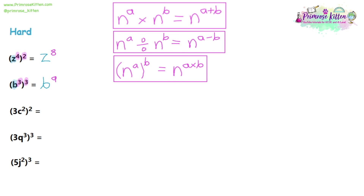Now with question 3, we've got some extra numbers involved. Let's look at what we know: the base is C, so write C. The powers are 2 and 2, so we multiply them — 2 times 2 is 4, giving C to the power of 4. But what do we do with the 3 at the start? With normal numbers, you follow normal rules. This 3 is in a bracket with a power of 2 on the outside, so we do 3 to the power of 2: 3 times 3 is 9. So the answer is 9C to the power of 4. Any extra numbers inside the brackets will be raised to the power that is outside the brackets.